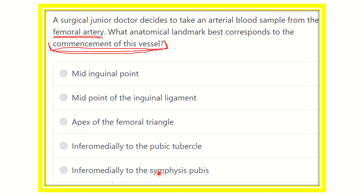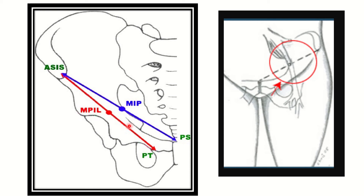Looking at the pictures: in the first picture, we can see the anterior superior iliac spine and the pubic tubercle. The attachment point of the inguinal ligament runs from the anterior superior iliac spine to the pubic tubercle, and the midpoint of this line is the midpoint of the inguinal ligament.